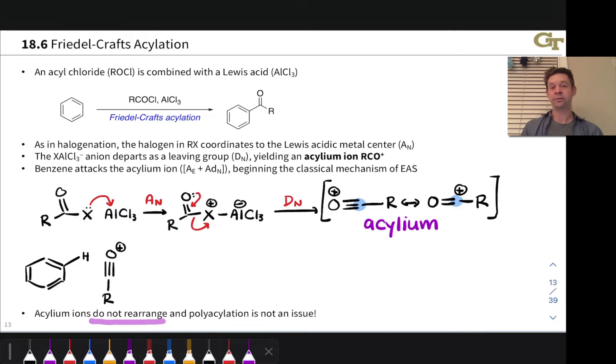That occurs in the first step of this mechanism, and I'm going to use the Lewis structure, the resonance structure rather, with the CO triple bond just to satisfy the octet rule on every atom, because why not?